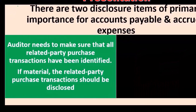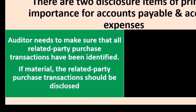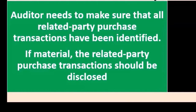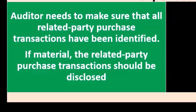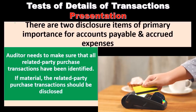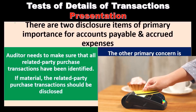The auditor needs to make sure that all related party purchase transactions have been identified. Whenever we have related party transactions — such as a subsidiary — we're concerned that there's not an arm's length transaction, and we don't have market forces to help us determine that the transaction is at market prices. Therefore, we want to identify those transactions, and if material, the related party purchase transactions should be disclosed, because that relationship makes those transactions suspect in terms of market validity.